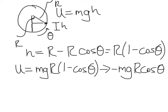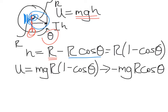For the potential energy, we imagine our bead is up at an angle theta. The gravitational potential energy in a constant gravitational field is mgh, the height above some reference surface. Taking the reference at the bottom point, h equals R minus r·cosine theta, making h equal to R times the quantity (1 minus cosine theta). So our potential energy is mgR times (1 minus cosine theta). The constant term only contributes a constant, so we can drop it and write the potential energy as minus mgR·cosine theta.